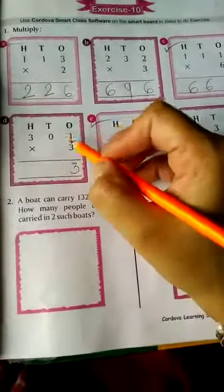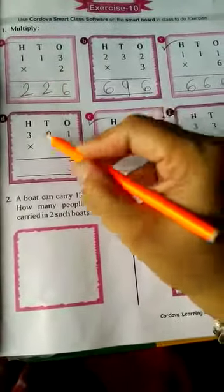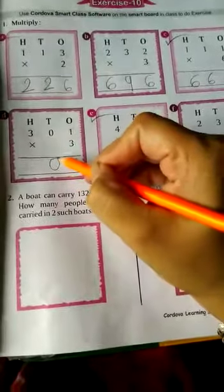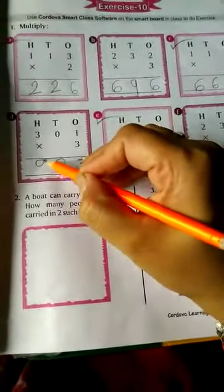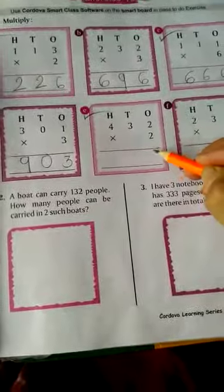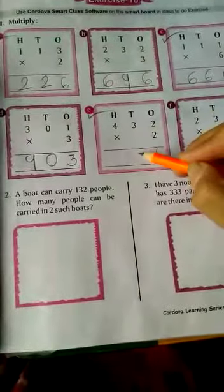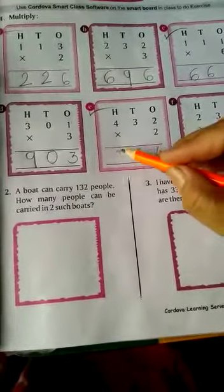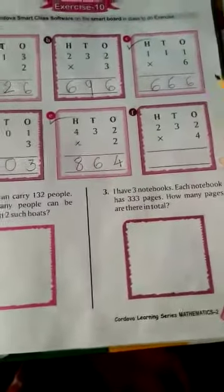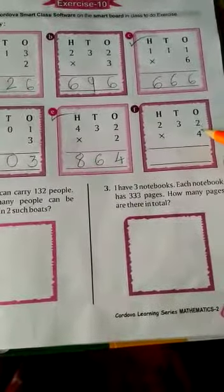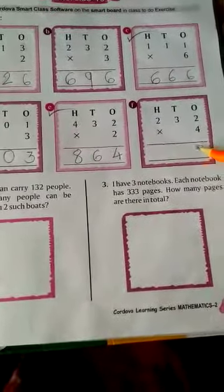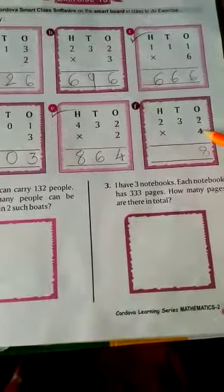3 ones are 3. Whenever you are multiplying any number with 0 then answer will come 0. 3 zeros are 0 and 3 threes are 9. 2 twos are 4, 2 threes are 6, and 2 fours are 8. Now you have to speak table of 4 otherwise 2, 2 fours are 8, 3 fours are...